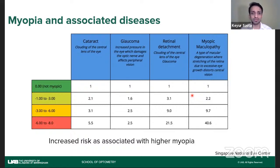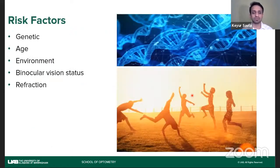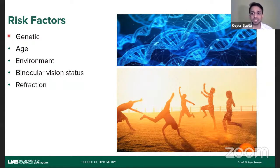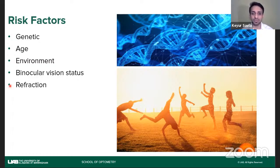What are the risk factors for myopia to develop? We do not know a direct answer as to why or how myopia happens because there are many risk factors: genetics, age, environment, binocular vision status, refractive error, and more have been identified but not strongly enough to make firm associations. There are multiple risk factors, which makes it very tricky for someone to pinpoint who is going to have myopia and who is not.